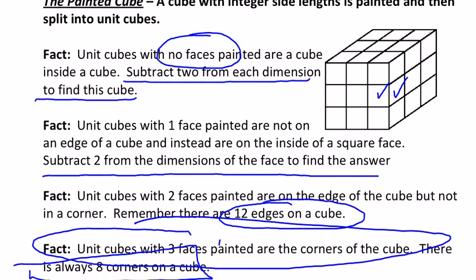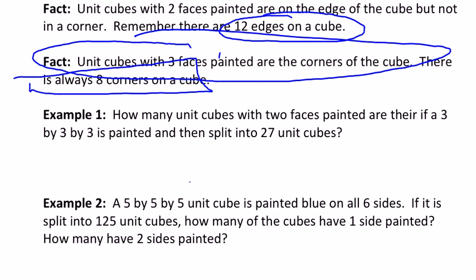So since there are 12 edges, the answer to this question is just 12, or one for that edge times 12, which is 12. And so the number of three by three that have two faces painted is just 12.